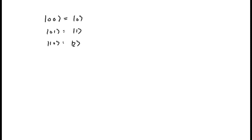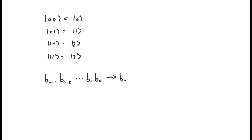A quick refresher on binary numbers: if we have a string of 1s and 0s — b_(n-1), b_(n-2), all the way to b_1 and b_0 — where each b is either a 1 or a 0, the decimal representation is b_0 × 2^0 + b_1 × 2^1, all the way up to b_(n-2) × 2^(n-2) + b_(n-1) × 2^(n-1). That's just how to convert between a binary string and its decimal representation.